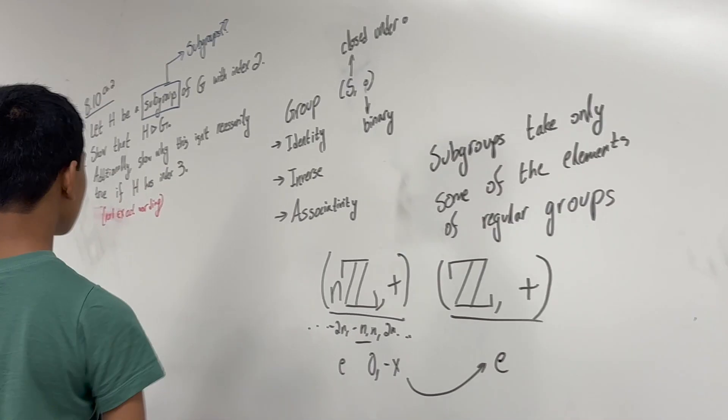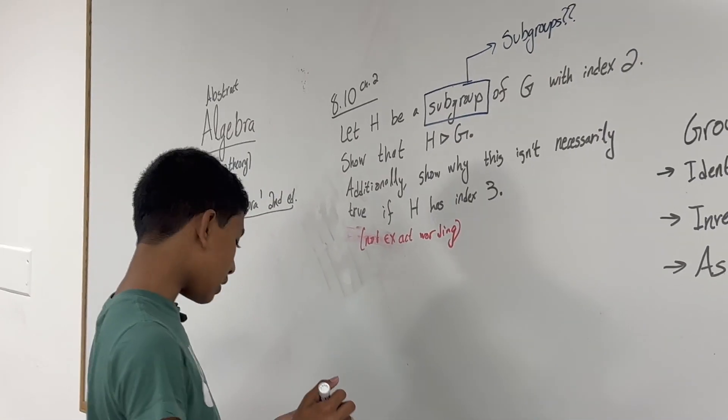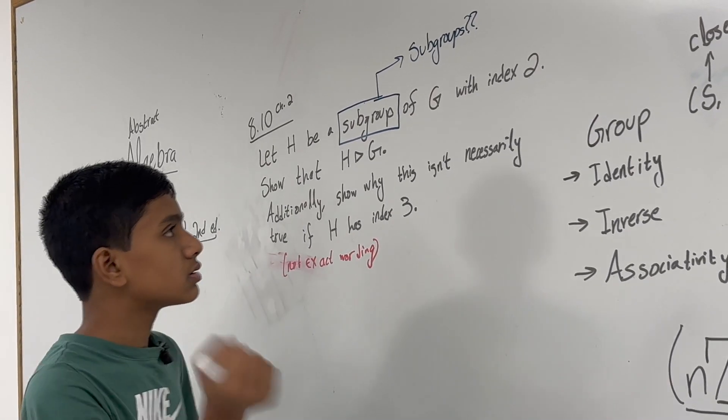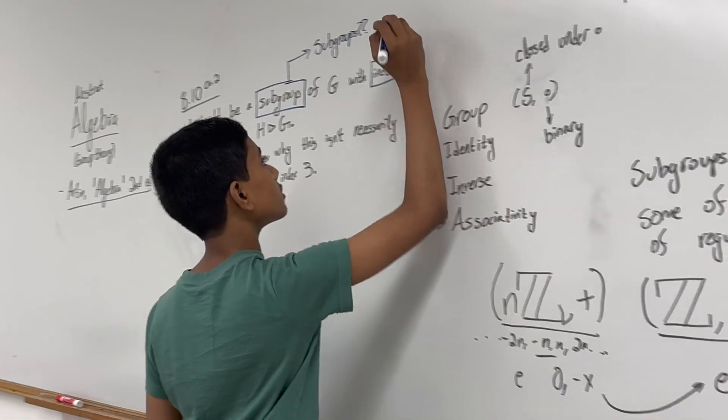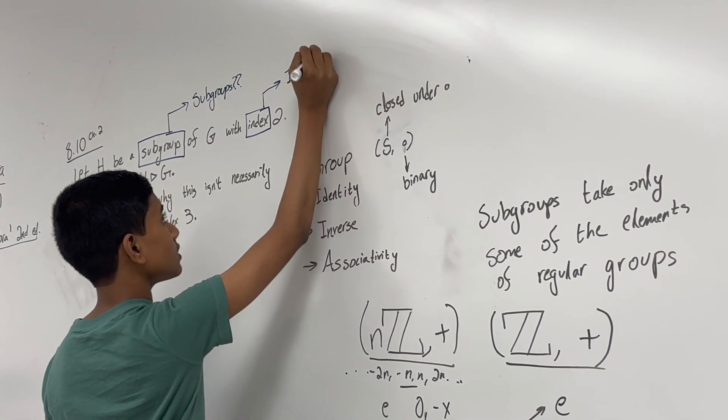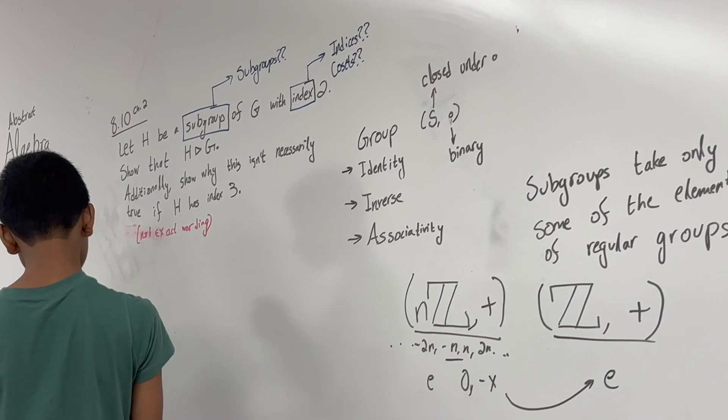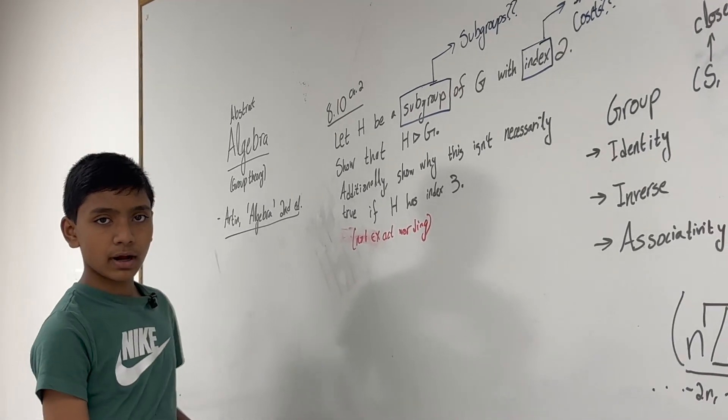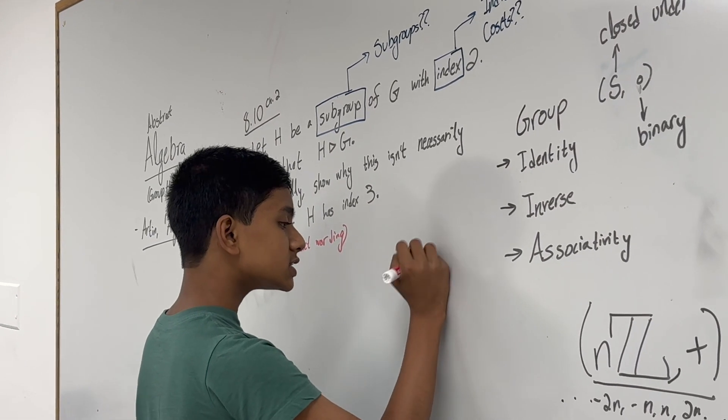We can prove a number of different things about groups and subgroups. For example, that a group and a subgroup will always have the same identity. But now, what we're going to be doing is something different. So now, let's talk about what an index is. To talk about indices, we need to talk about cosets.